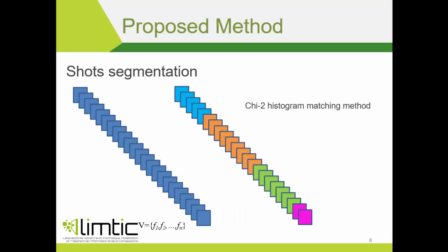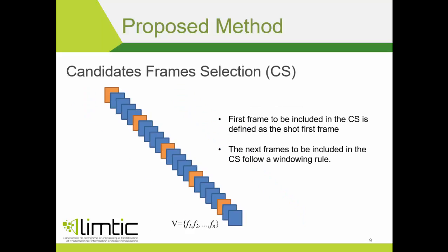In this work we developed a keyframe extraction method based on local features, designed to deal with the problems identified in related work discussed previously. The first step consists of shot segmentation by using the chi-square histogram matching method. In order to select the best frames to be the keyframes of each shot, we initially select some frames into a candidate set. The first frame included in the candidate set is defined as the shot's first frame, which guarantees that each shot will be represented by at least one keyframe.